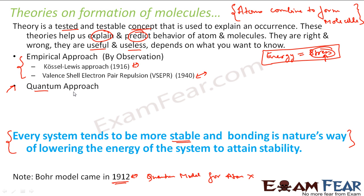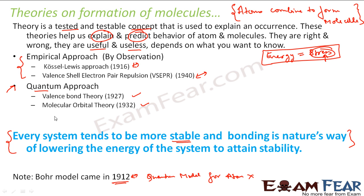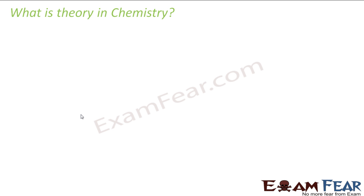With this quantum approach, chemists proposed two theories: one was the valence bond theory in 1937, and the other was the molecular orbital theory in 1932. So these are the four theories we have — two based on the empirical approach by observation, and two based on the quantum approach, which can now explain atoms and molecules better.